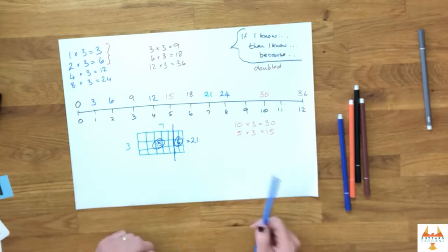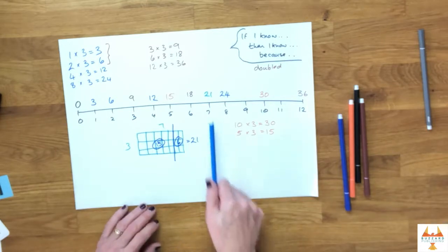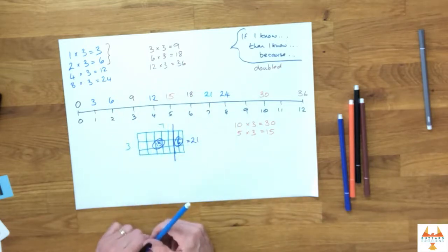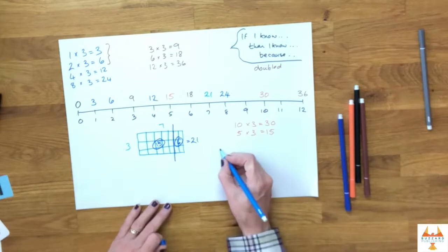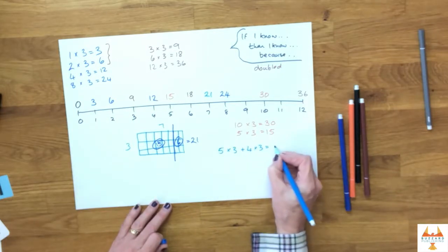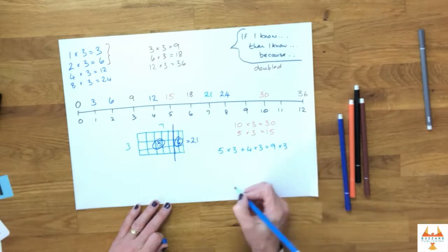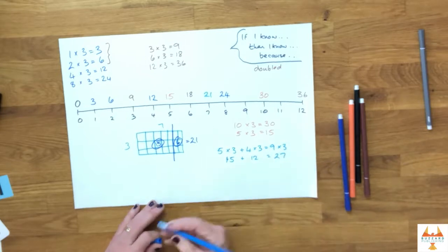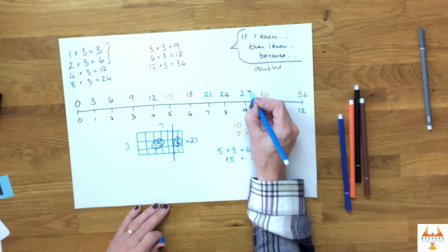So our next one then, if I'm thinking about nine threes, I can use the same principle and think which of these facts, which combination of these facts could give me nine threes. Well, if I've got five times three plus four times three, that'll equal nine times three. So five threes are 15 plus four threes are 12, means that nine threes are 27. So I can pop that one in there.